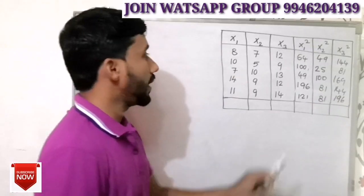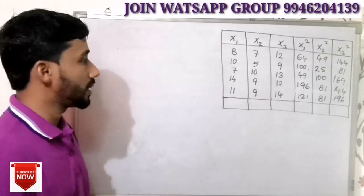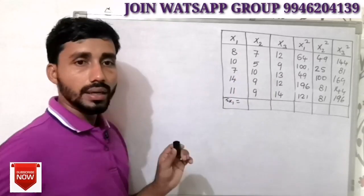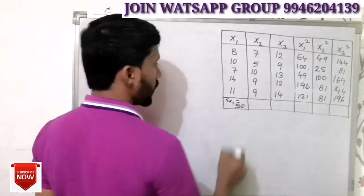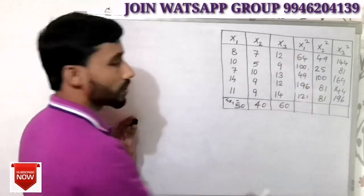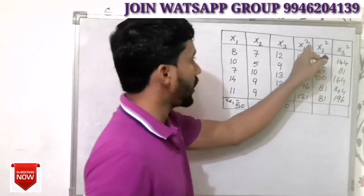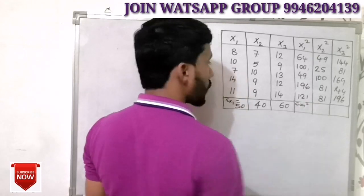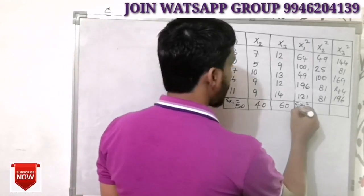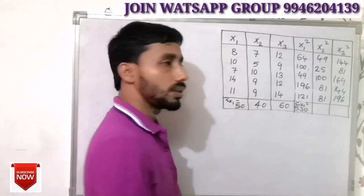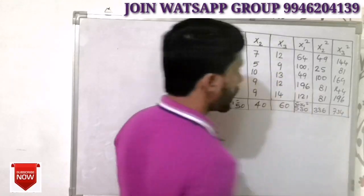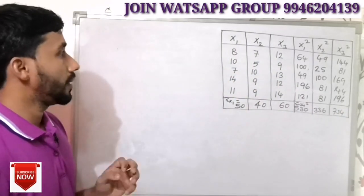Now we calculate the totals. We calculate sigma x1, sigma x2, and sigma x3. The total for sigma x1 is 50, sigma x2 is 40, sigma x3 is 60. We also calculate the sum of squares: sigma x1 squared total is 530, sigma x2 squared is 336, and sigma x3 squared is 734.